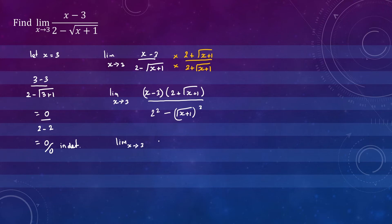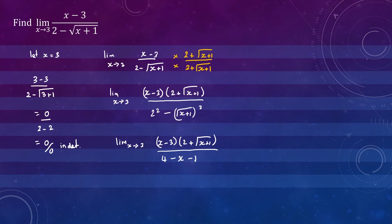Writing the numerator as x minus 3 times 2 plus the square root of x plus 1, and in the denominator we'll have 4 minus x minus 1, which simplifies to 3 minus x. Notice that in the numerator we have x minus 3, so we can rewrite 3 minus x as negative x minus 3.